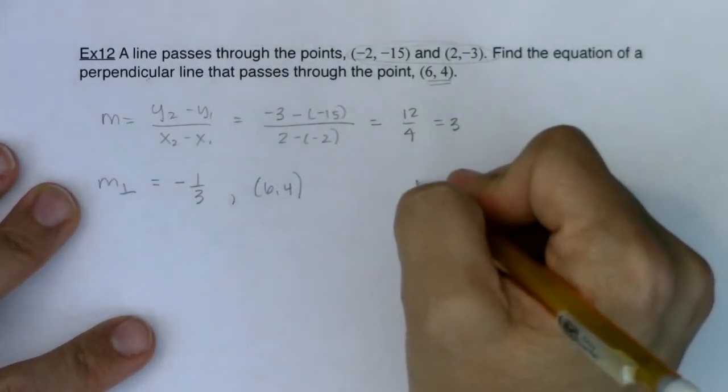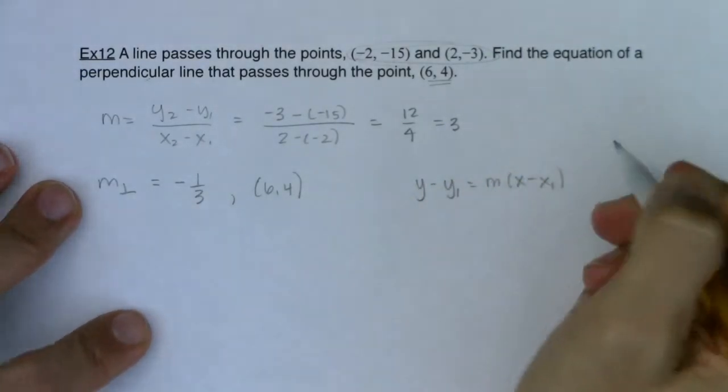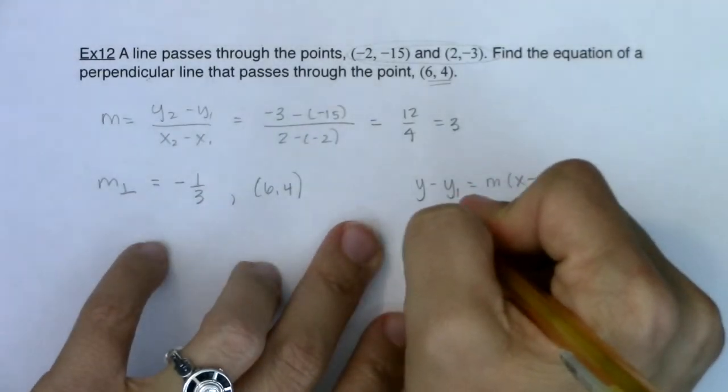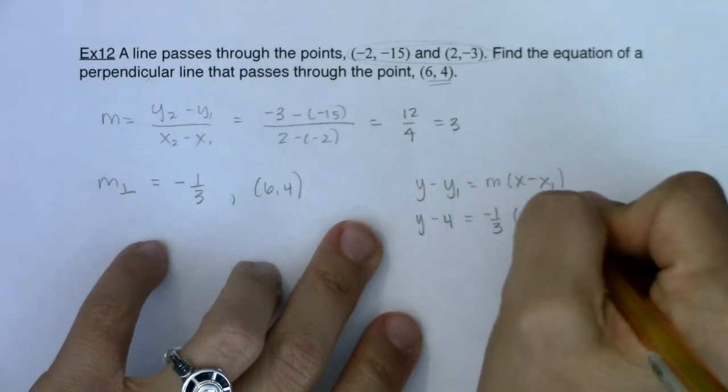So with that, I'm going to go right into point-slope form. y minus y1 equals m times (x minus x1). So y minus 4 would equal (-1/3) times (x minus 6).